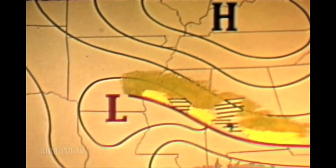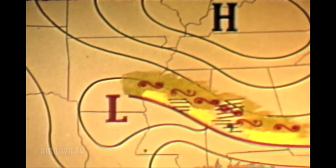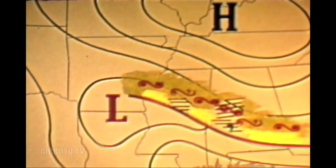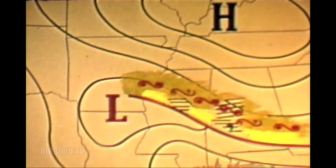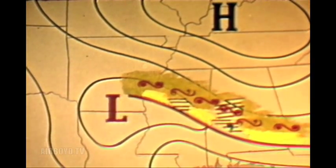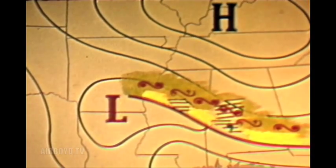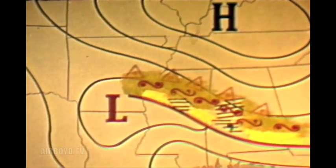When this precipitation falls into the cold air below, it changes to freezing rain or freezing drizzle, which becomes structural ice when it strikes your aircraft. Still further ahead of the front, the super-cooled water droplets falling through a thicker layer of cold air have time to solidify and produce a layer of sleet.